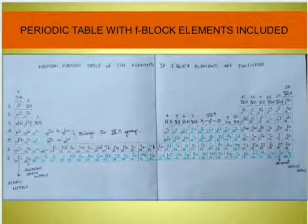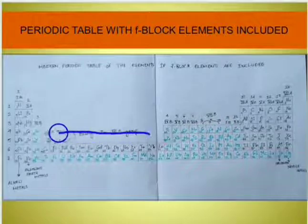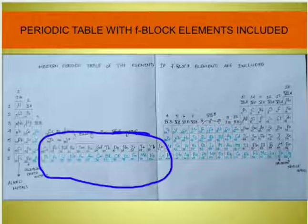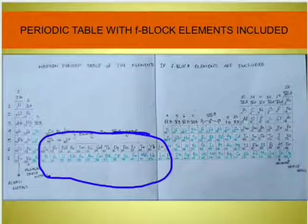Here I have tried to represent the periodic table by inserting the F block elements along with the main group and other group elements. As you can see, it is very difficult. These are the F block elements inserted between the S and D block elements according to atomic number. Lanthanides, starting from cerium to lutetium, are placed after lanthanum, and the actinoids, from thorium to lawrencium, are placed after actinium, all arranged in order of increasing atomic numbers.